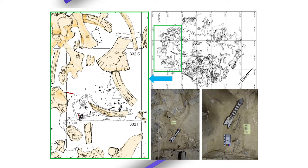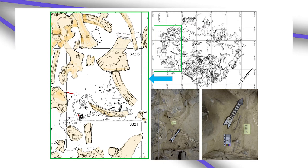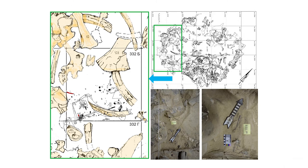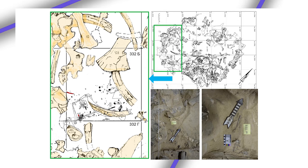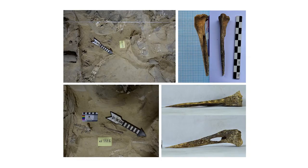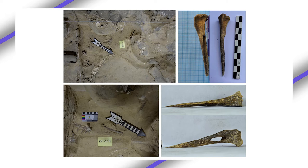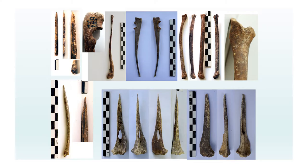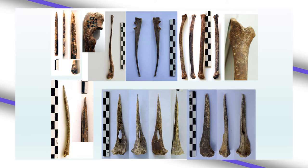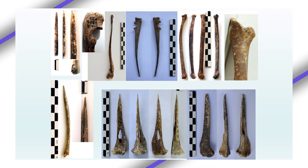In the eastern sector, we found several anatomical groups of small and medium-sized animals, together with tools connected with skin processing — awls and needles. Here we can see vertebrae in anatomical position, long bones, and different long bones of hare with traces of cutting and scratching.